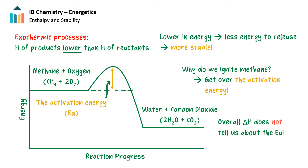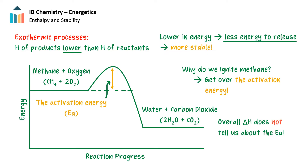Now, here's another question. Why are some species lower in energy than others? That is, why are these reactant molecules higher in energy than these product molecules in this exothermic reaction? Well, when a state is lower in energy, it's more stable energetically. We released energy to get from that higher energy state, so now we're in a lower energy, more stable state. As we know, chemical species generally want to become more stable.